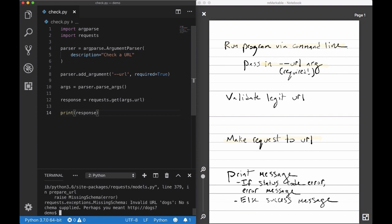Great. Let's see what happens if we pass in a bogus URL like dogs. Perfect. It looks like we get an error. Invalid URL dogs. No schema supplied. That's good enough for me. Let's check off validate legit URL. Now let's take a look at the final item on our list